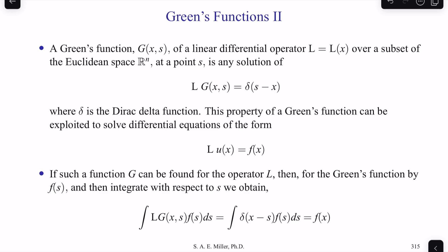The Green's function, which could be defined in x and s, is a transform of a linear differential equation L over space x in a subset of Euclidean space R^n, where n is the dimension at any point s, is a solution of the linear operator of that differential function times the Green's function G goes as the Dirac delta function of s minus x. So s is in the space x. It's a particular point.